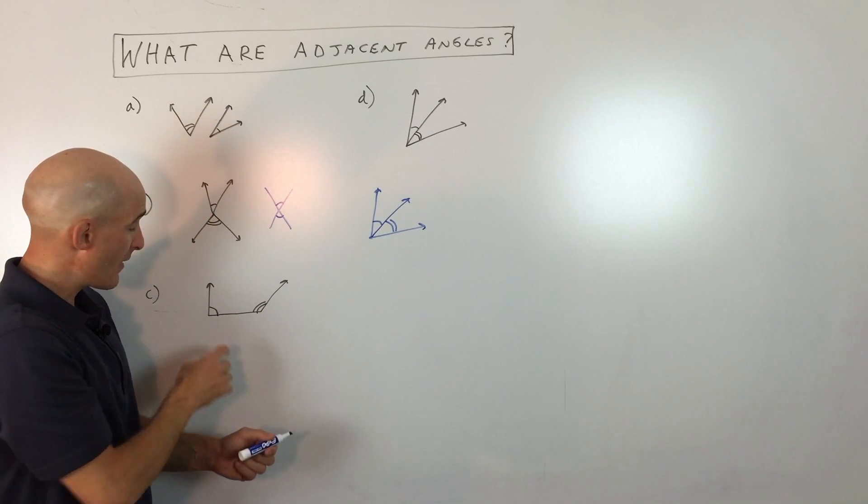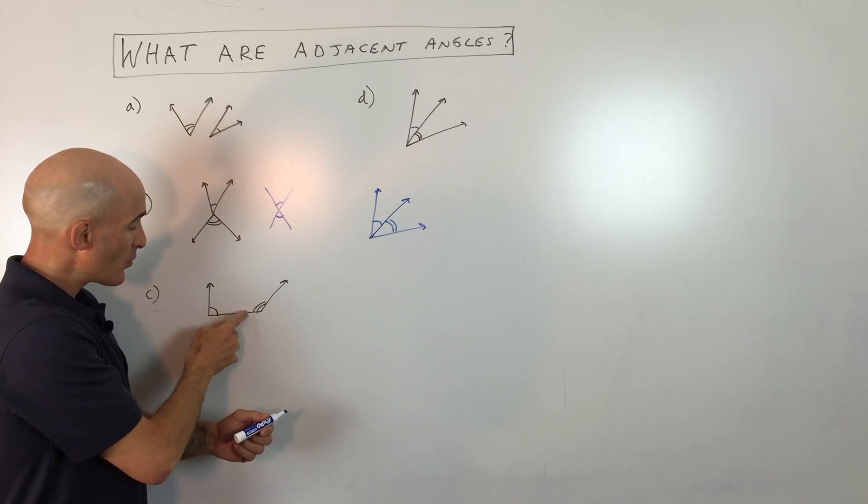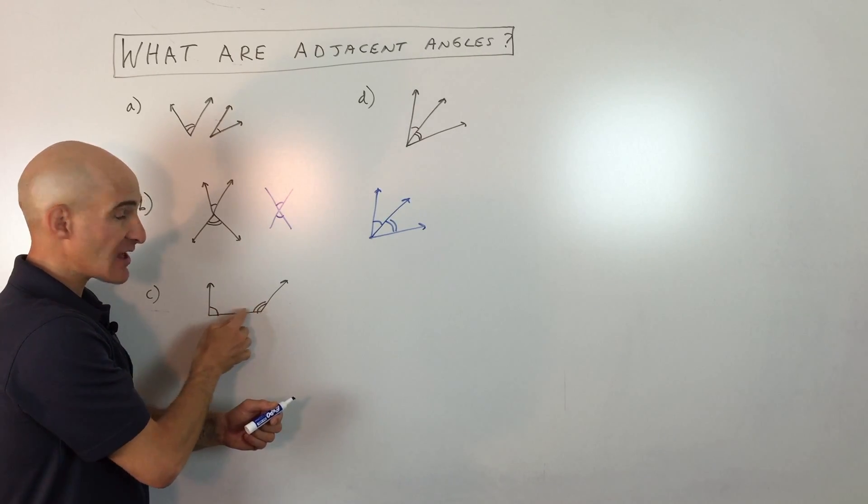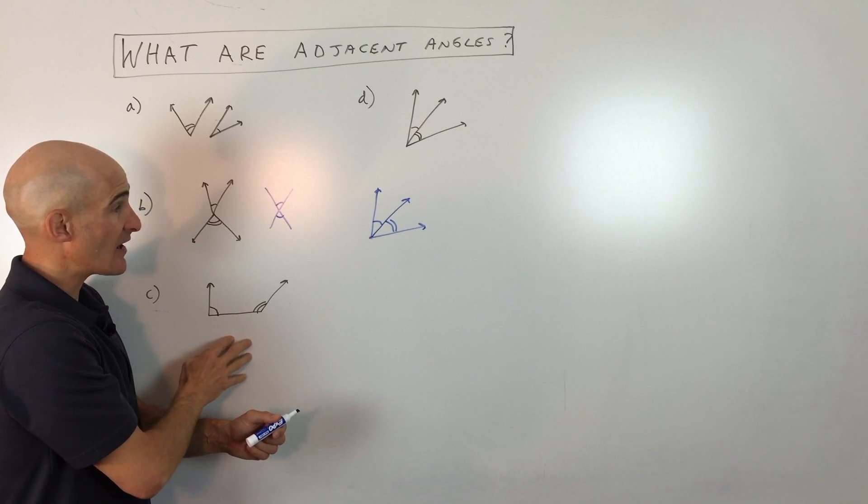And then here, letter C, what we have is we have these two angles. Here, they're sharing like the side, the side of the angle, but they're not sharing that hinge, that vertex. So these are not adjacent angles.